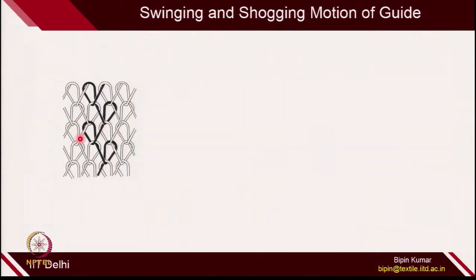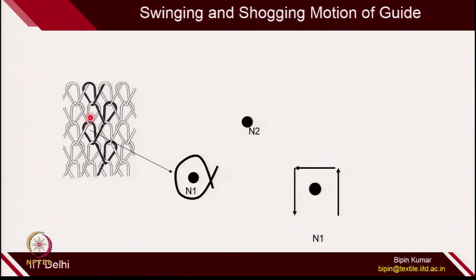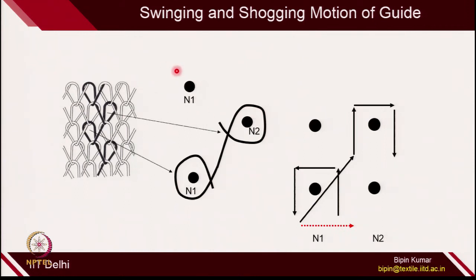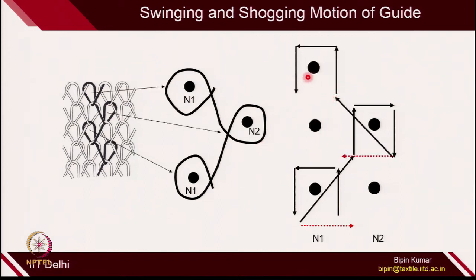Instead of drawing complicated diagrams, we can simply draw the movement of one individual yarn and denote their movement by numbers. The loop is formed by needle N1, then in the second course by needle N2, then back to N1. This is how the yarn shifts from one needle to another during the course. This planar view represents how movement actually happens on the machine, with lateral movements and swinging motions for each course development.